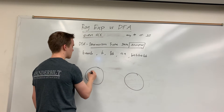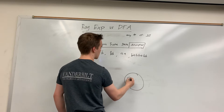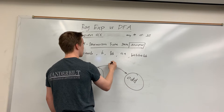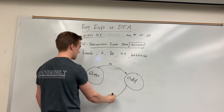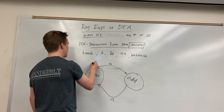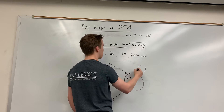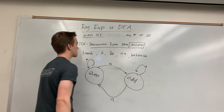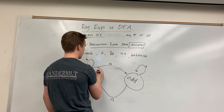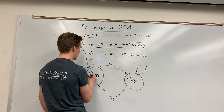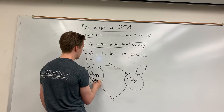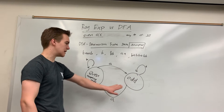We just need one state called 'even' and one state called 'odd.' If we see an A in the even state, we go over to odd. If we see an A in the odd state, we come back to even. If we see a B in either state, we stay where we are. An important feature here is that the even state is the only accepting state.